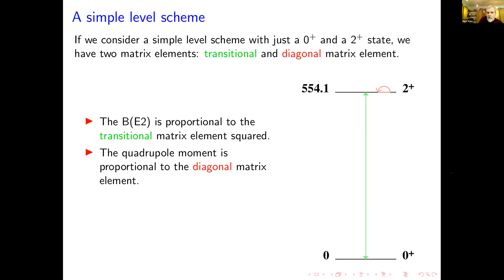The transitional matrix element is related to the B(E2) — in fact the B(E2) is proportional to this matrix element squared. The other one is the red diagonal matrix element, which is related to the quadrupole moment. You can talk in terms of transitional and diagonal matrix elements, or in terms of B(E2) and quadrupole moment, with the caveat that with the B(E2) you've already dropped the sign — and although absolute signs don't matter, relative signs do because you can get interference.